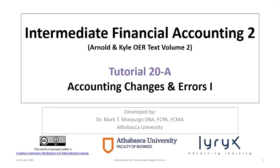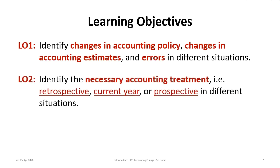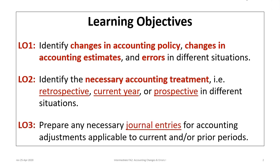Hello and welcome to Intermediate Financial Accounting 2, Tutorial 20a. This is the first of three tutorials related to accounting changes and errors. This tutorial has three major learning objectives: first, to identify changes in accounting policy, changes in accounting estimates, and errors in different situations; second, to identify the necessary accounting treatment — retrospective, current year, or prospective; and third, to prepare any necessary journal entries for accounting adjustments applicable to current and/or prior periods.